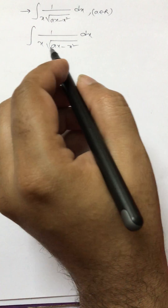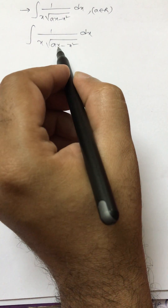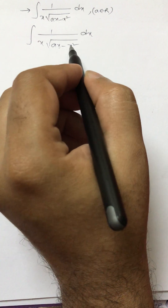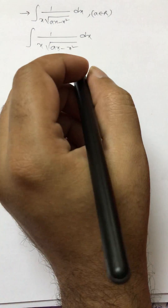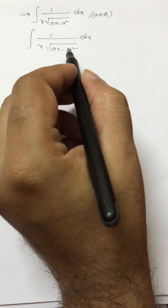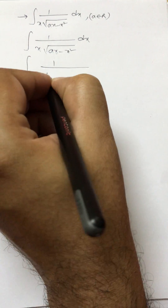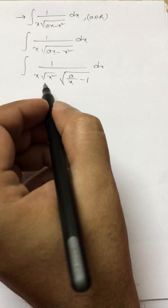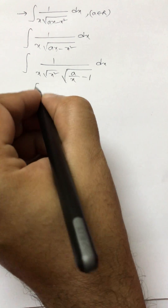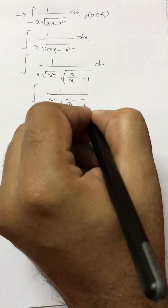What we do is use a little rearrangement to solve this. If we take x common, we get x into root of x into a minus x, but that cannot be solved easily. So instead, we take x squared out from under the square root. Taking x squared out, we get 1 by x into x, which gives us 1 by x squared, root of a by x minus 1, dx.